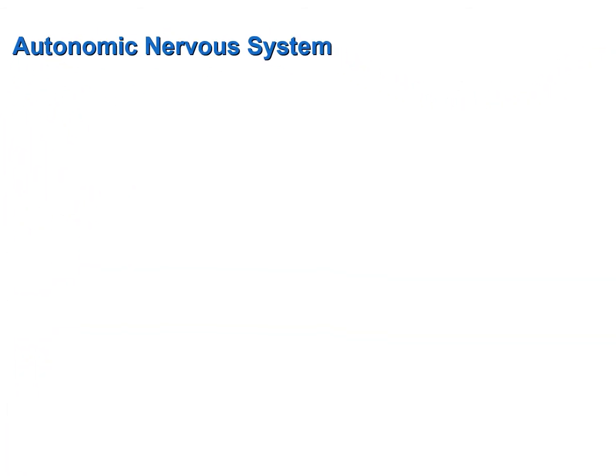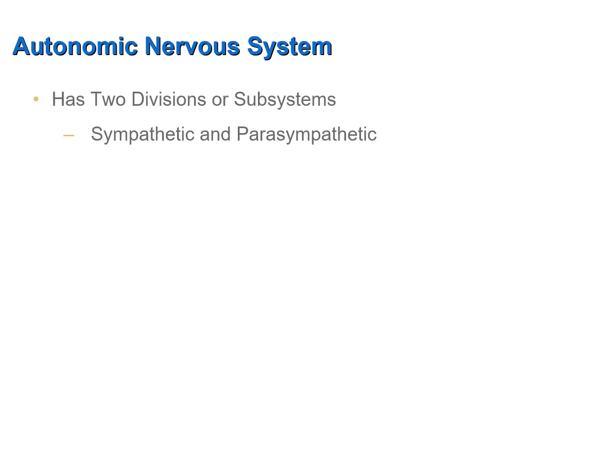Now that you have a good understanding of the differences between the autonomic and somatic nervous systems, let's continue to discuss the autonomic nervous system. The autonomic system has two divisions: the sympathetic and the parasympathetic.